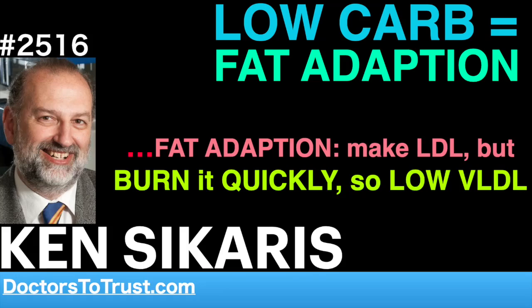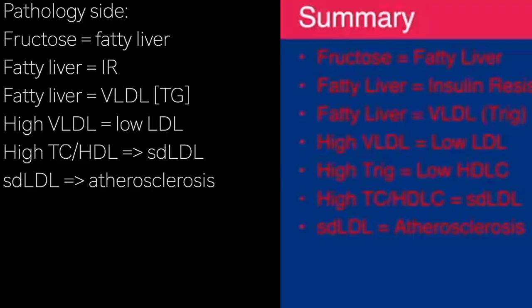So in summary, we've got this black and white. We're so focused on pathology on the left-hand side. Fructose equals fatty liver. Fatty liver equals insulin resistance. Fatty liver equals VLDL and high triglycerides in the blood. High VLDL means low LDL. High trigs means low HDL. High cholesterol HDL ratio predicts small dense LDL. Small dense LDL predicts atherosclerosis. That's all the disease side.